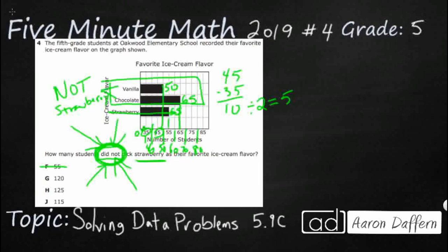So vanilla is 50, chocolate is 65, there's very little regrouping required there. Add those up, and you're going to get 115, which is one of our choices. So that is our answer here, J. 115 students did not pick strawberry.